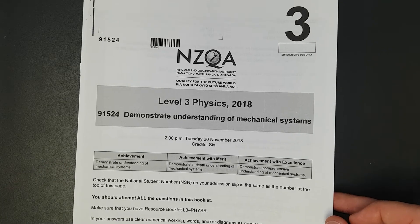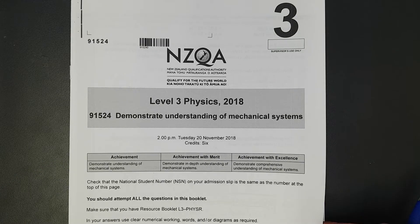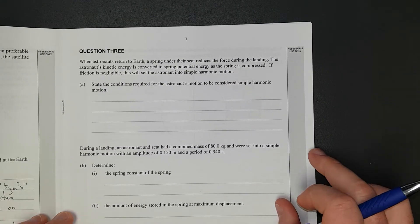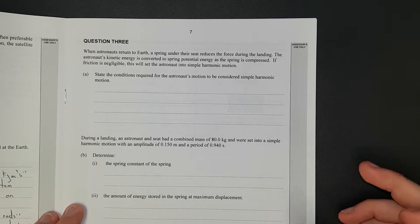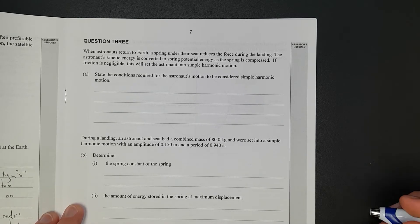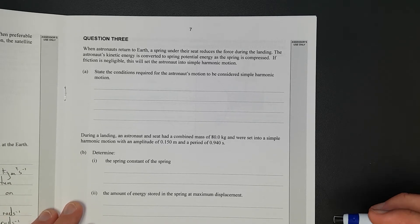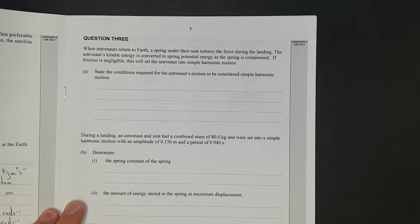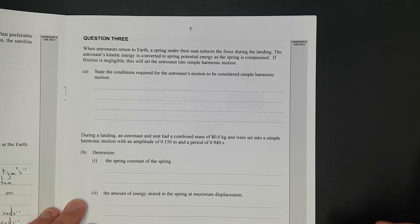For this video I'll be working through question 3 of the 2018 level 3 mechanics exam. The problem states: astronauts return to earth, a spring under the seat reduces friction or force. During landing the astronaut's kinetic energy is converted to spring potential energy as the spring compresses.